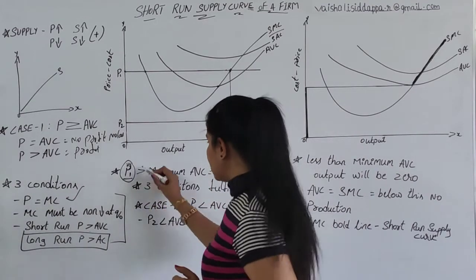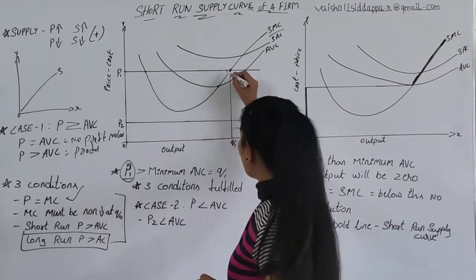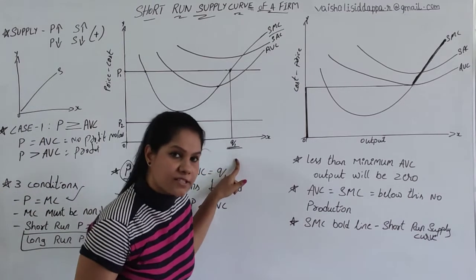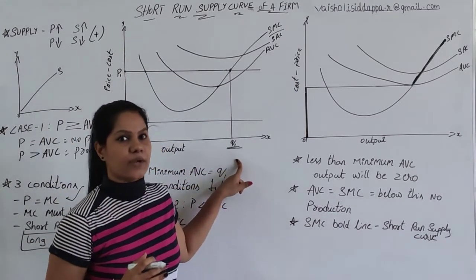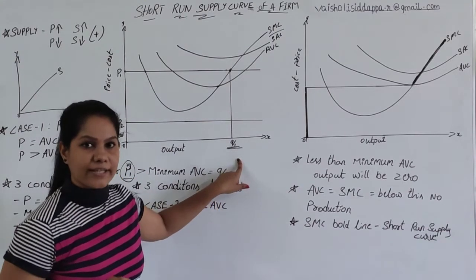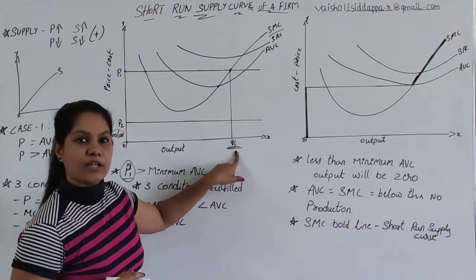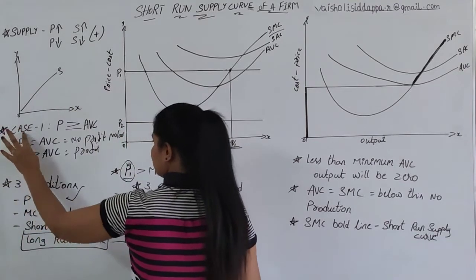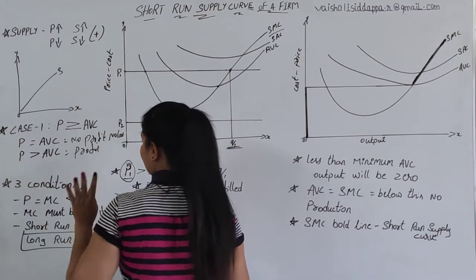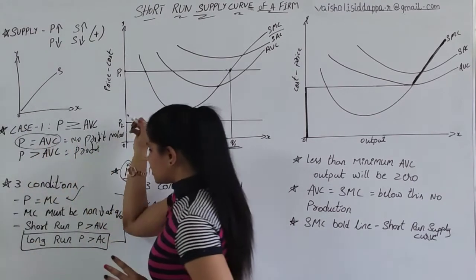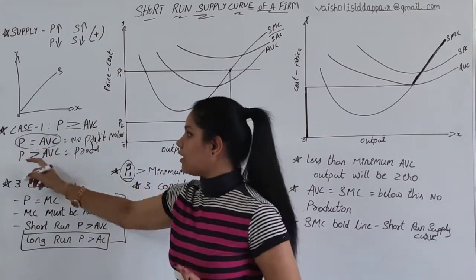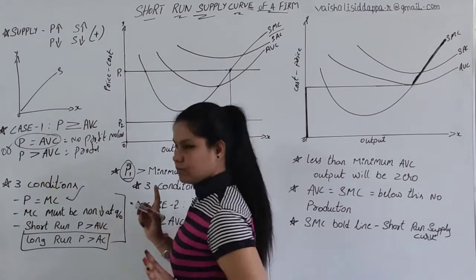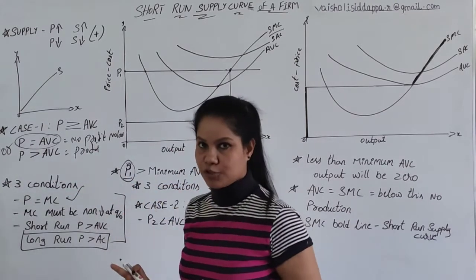P1 is the best price, and the quantity we are supplying at it is Q1. When profit maximization conditions are all fulfilled, the quantity the firm is ready to supply is Q1. So we are done with Case 1 — P is greater than AVC in this situation, confirming a profit maximization scenario.